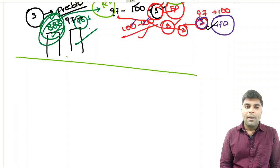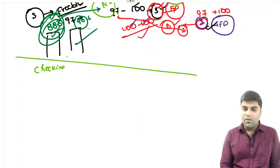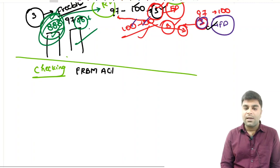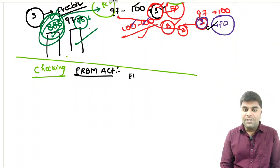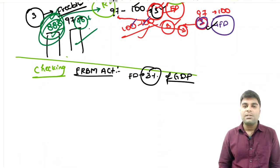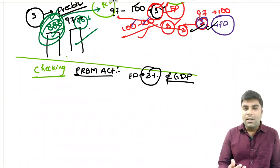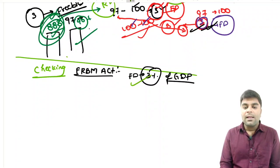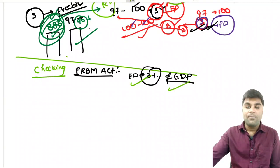So it is very important to go for more and more capital expenditure now, so that it generates revenue in the future and does not impose a tax burden on future generations. This is how it should happen. The checking mechanism for governments going for excessive fiscal deficits is the FRBM Act — the Fiscal Responsibility and Budget Management Act.